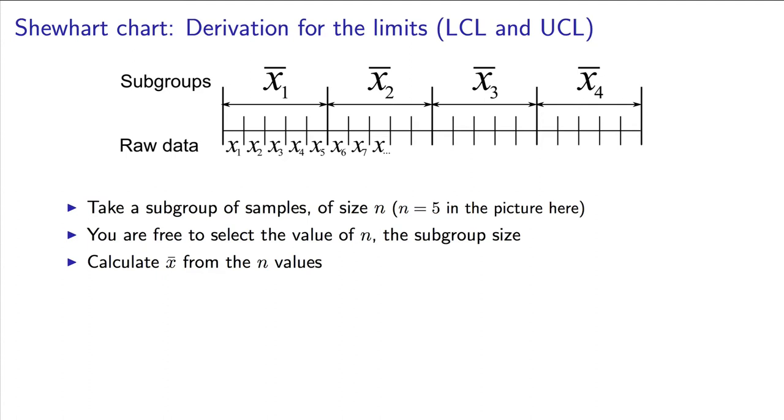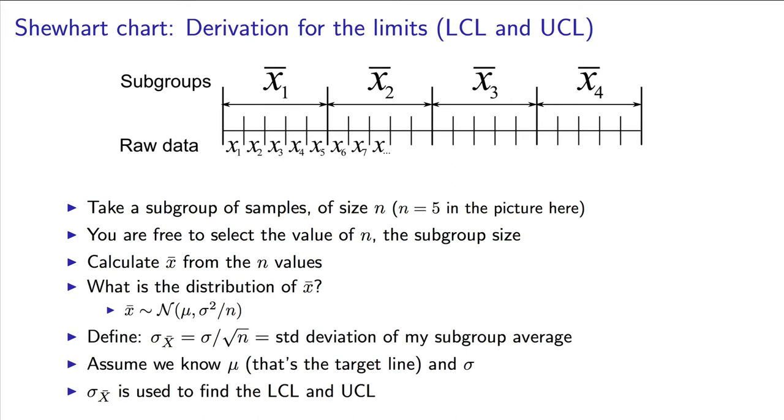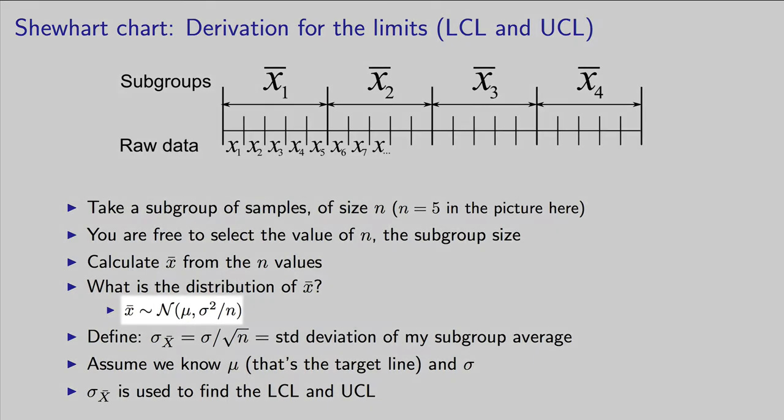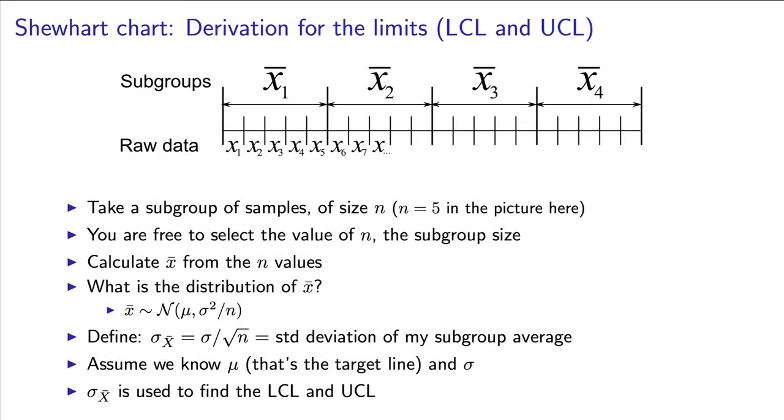We discuss this more in an upcoming video. Let's assume you are using n values in your subgroup, and that you've calculated this average now, x bar. Do you recall from an earlier part of this course what the distribution of x bar will be? You should recall that it is from the normal distribution, and furthermore, that normal distributions will have a mean of mu, and a variance of sigma squared over n. We can define, then, and call the standard deviation of the subgroup average, sigma x bar, and that will be equal to sigma over root n.